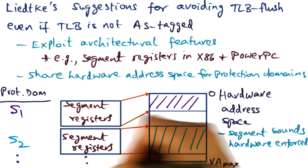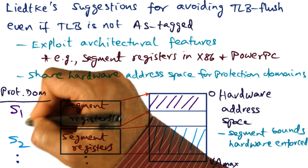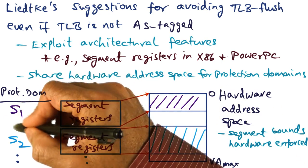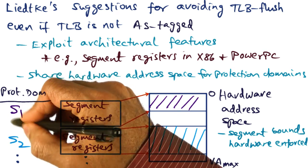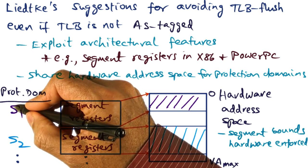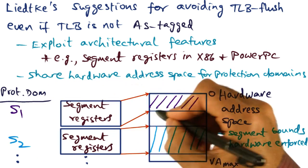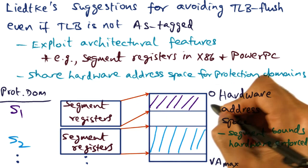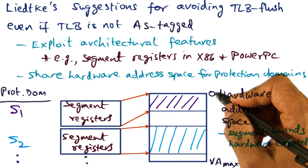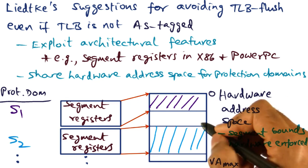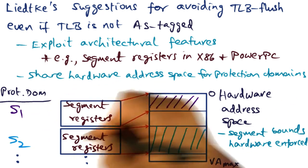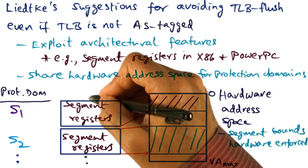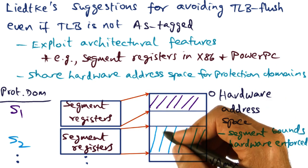This works really well if these protection domains are fairly small, meaning that the memory space needed by any given protection domain is not the entire hardware address space but only a portion of it. So we're able to carve out the available hardware address space among multiple co-resident protection domains using the concept of segment registers.